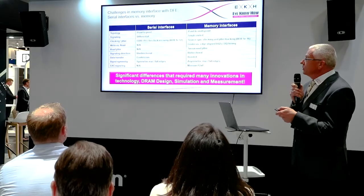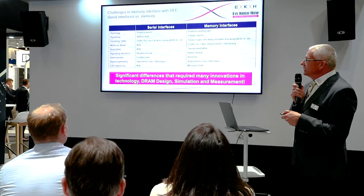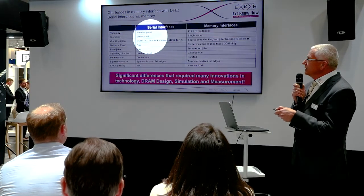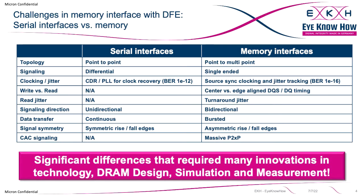Also, signaling for any kind of equalizer was never intended to be single-ended — it was always intended to be differential signaling. Even the clocking on serial interfaces uses clock and data recovery with a phase-locked loop for clock recovery, which is significantly different from memory, where we need source-synchronous clocking — sending the DQ and DQS source-synchronously in order to be able to capture the data.